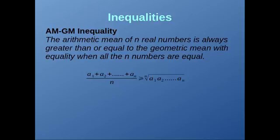This is the AM-GM inequality. This inequality basically states that the arithmetic mean of n numbers is always greater than or equal to the geometric mean of those numbers. That is, let's say we have numbers a1, a2, a3, a4, till an. Their arithmetic mean is their sum divided by n, which is a1 + a2 + a3 + ... + an all divided by n. This is always greater than or equal to the nth root of their product, which is the nth root of a1 · a2 · a3 · ... · an.